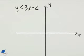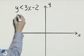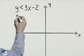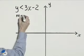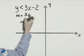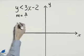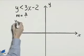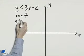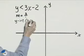To graph the inequality y is less than 3x minus 2, we can graph this using the slope m equals 3 over 1, so we'll go up 3 units and over 1, and the y-intercept is at (0, negative 2).